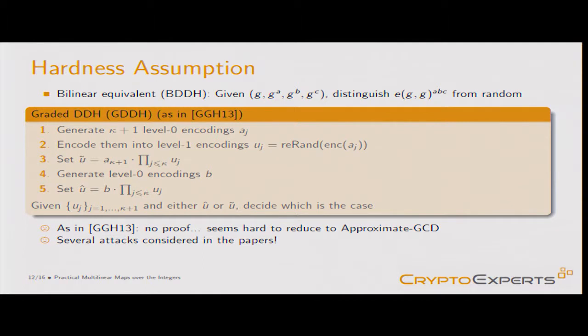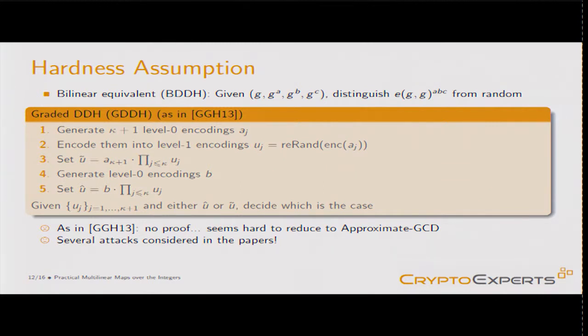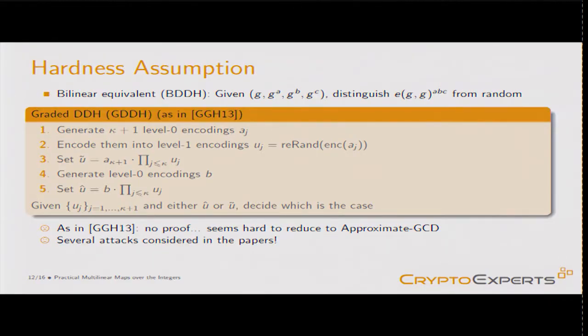The hardness assumption is the graded DDH, which is the equivalent of bilinear DDH. In bilinear DDH, given three encodings you distinguish the pairing evaluated to the product of the three scalars from a random element. We don't have a security proof and it seems difficult to reduce to classical hardness assumptions, but we consider several attacks in the full version of the paper to assess the parameters.